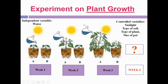Here is an example of a prediction test to identify plant growth. Plant growth is the dependent variable, water is the independent variable, and the control variables are sunlight, type of soil, type of plant, and size of pot. Plant A acts as the experimental group and receives water, while Plant B acts as the control group and does not receive water. We are identifying the impact of water on plant growth.